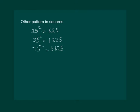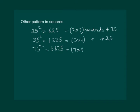That means actually they are following a pattern. We have 2 into 3, 100 plus 25. Similarly, we have 3 into 4, 100 plus 25. Then we have 7 into 8, 100 plus 25.